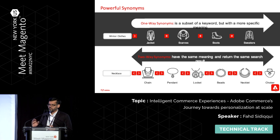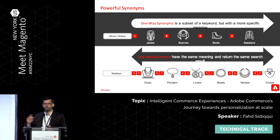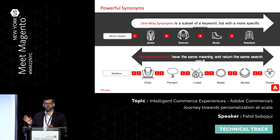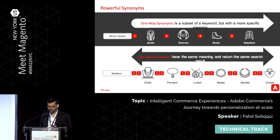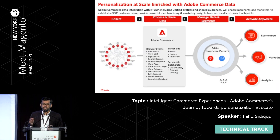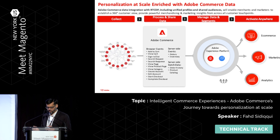We have synonym search — our work is far from done, smart synonyms are still coming, but people can do one-way and two-way synonyms today. A one-way synonym: if somebody's asking for 'winter clothes,' you can map it one-way to jackets and sweaters — but not vice versa, because if somebody's more specific you don't want to give a broader result set. In future, we want to integrate with the broader Adobe Experience Cloud offering to help with personalization at scale.